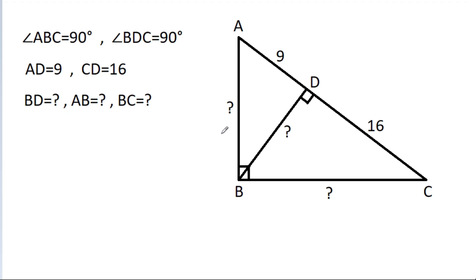In this video, we have given that angle ABC is 90 degrees, angle BDC is 90 degrees, AD is 9, and CD is 16. We have to find BD, AB, and BC.